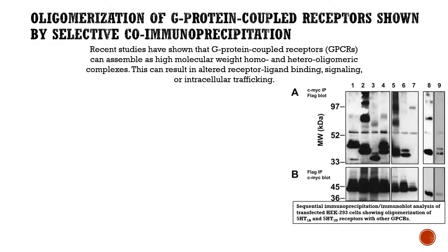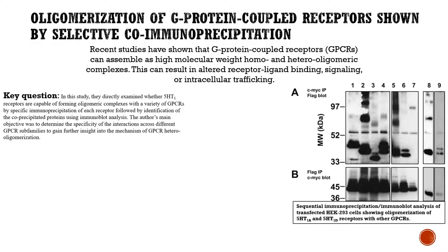The title of the study chosen is "Oligomerization of G-Protein Coupled Receptors Shown by Selective Co-Immunoprecipitation." Recent studies have shown that GPCRs can assemble as high molecular weight homo- and hetero-oligomeric complexes, which can result in altered receptor ligand binding, signaling, or intracellular trafficking. In this study, the authors directly examined whether 5-HT1 receptors are capable of forming oligomeric complexes with a variety of GPCRs by specific immunoprecipitation of each receptor, followed by identification of the co-precipitated protein using immunoblot analysis. The authors' main objective is to determine the specificity of interactions across different GPCR sub-families to gain further insight into the mechanism of GPCR hetero-oligomerization.